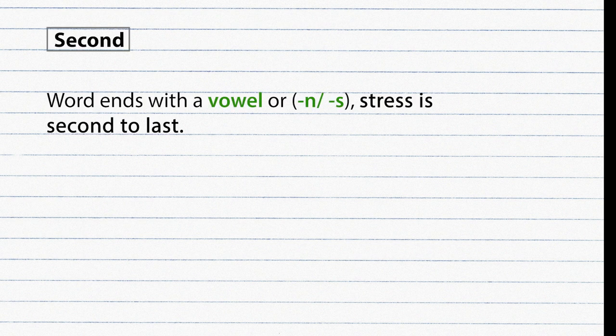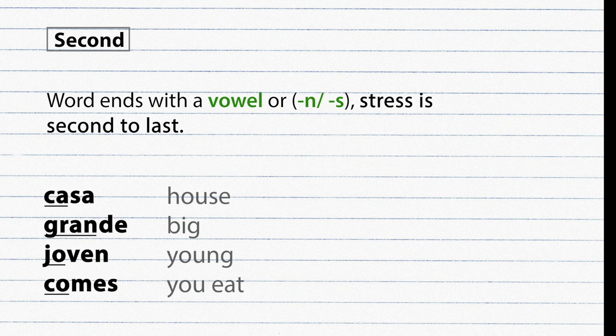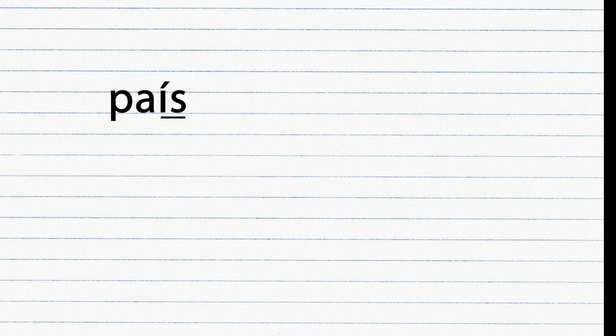Second rule: if a word ends with a vowel or the letters N or S, the stressed syllable is the second to last. If a word doesn't follow these two rules, the vowel on the louder syllable will carry an accent mark.